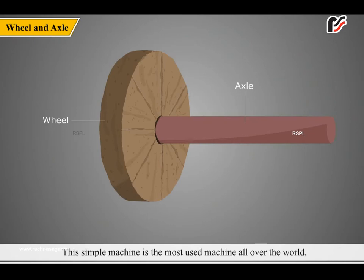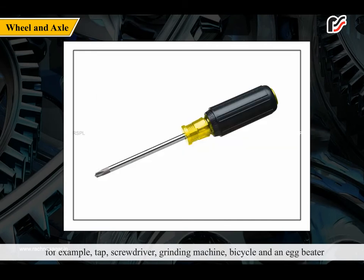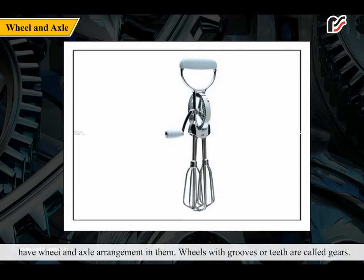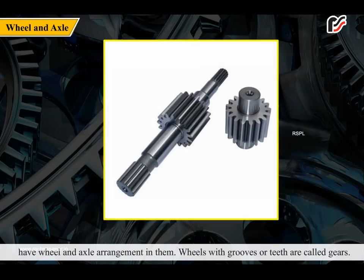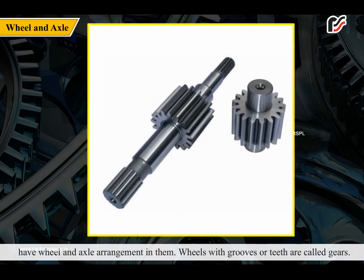The wheel and axle is the most used simple machine all over the world. A wheel attached to a rod is called a wheel and axle arrangement. For example, a tap, screwdriver, grinding machine, bicycle and egg beater have wheel and axle arrangements in them. Wheels with grooves or teeth are called gears.